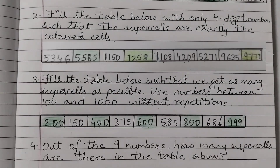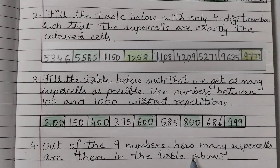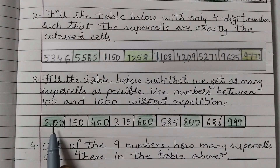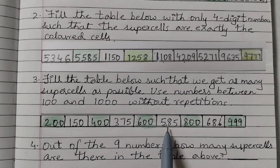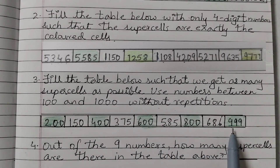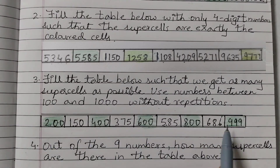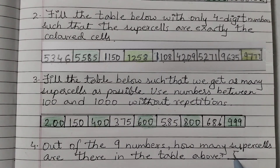Question number 4: out of the 9 numbers, how many supercells are there in the table? In this table there are 9 cells: 1, 2, 3, 4, 5, 6, 7, 8, 9. Out of these 9 numbers, how many are supercells? 1, 2, 3, 4, 5 — so there are 5 supercells.